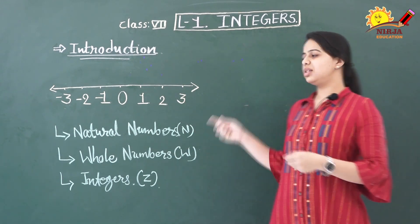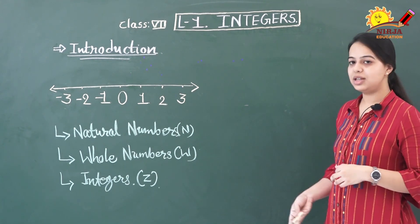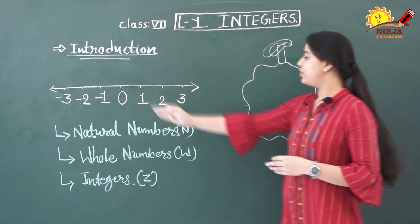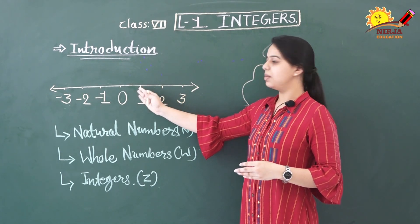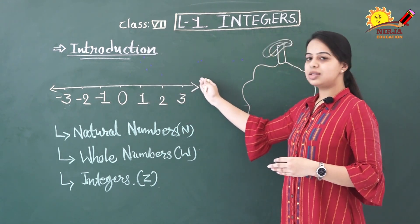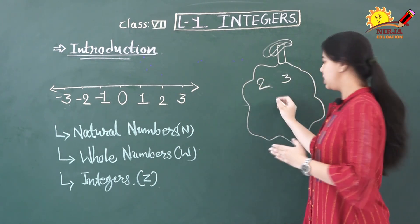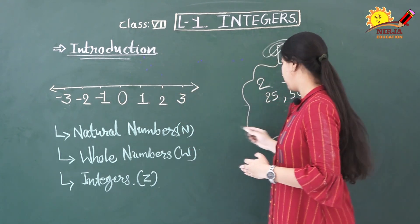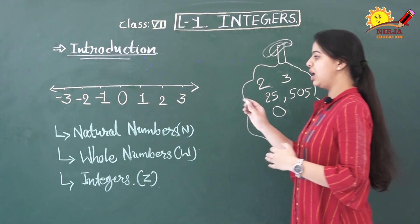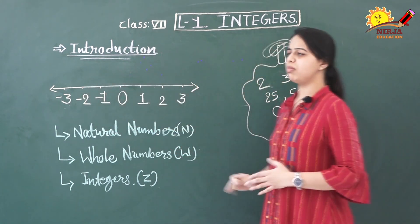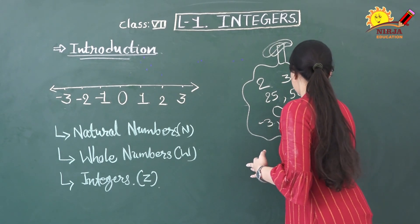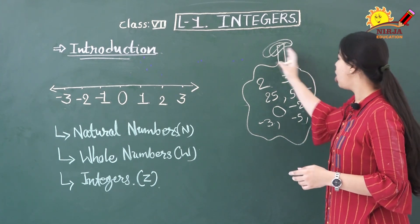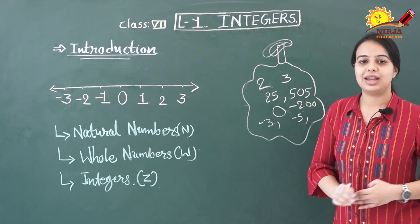Let us start to collect these numbers, but we need a bag to collect them. I am taking one bag to collect the numbers from the number line. Starting from the counting number 1, walking on the right side, I collected 2, 3, 25, 505, and so on. Then I went back to pick 0, and then I started collecting some negative numbers also, like minus 3, minus 5, minus 200.